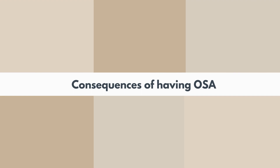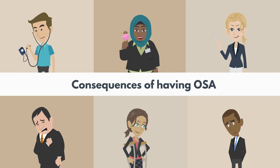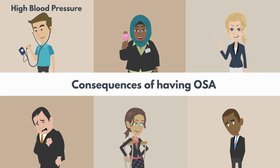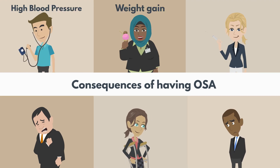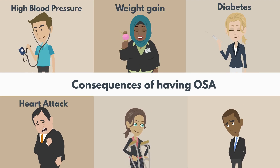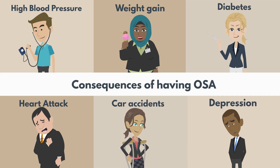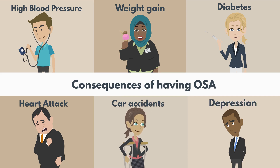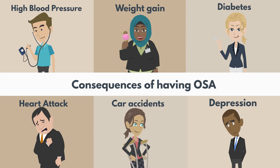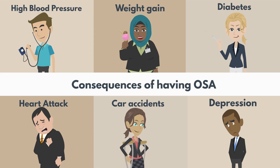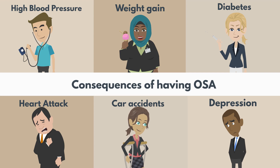Sleep apnea leads to a lot of other conditions, and that is why it is so dangerous. It can lead to raised blood pressure and diabetes, for example. Interestingly, as soon as you treat obstructive sleep apnea, the blood pressure and sugar levels can return to normal.